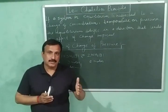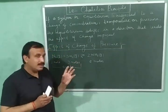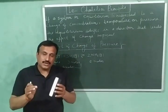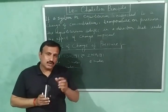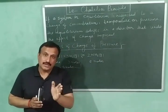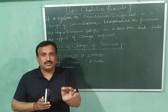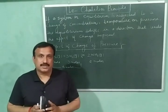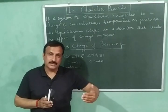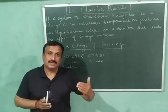A lesser number of moles generates less pressure, and a larger number of moles results in more pressure. If we increase the pressure on the system, then according to the Le Chatelier Principle, the equilibrium will shift in the direction in which the pressure decreases again. Since lesser number of moles produce less pressure, the equilibrium will be shifted in the direction which involves a decrease in number of moles.